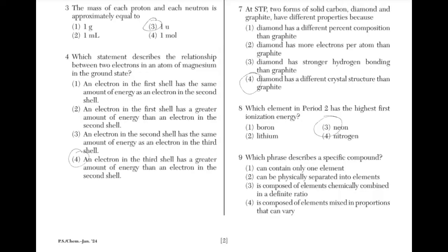Which phrase describes a specific compound? The answer is 3: it's composed of elements chemically combined in a definite ratio. A compound will always have fixed proportions.